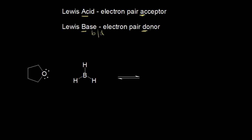In this reaction, a cyclic ether on the left reacts with borane on the right. Boron has no full octet—it's surrounded by only six electrons—making it very reactive. Boron is sp2 hybridized, meaning it has an empty p orbital that can accept a pair of electrons. The oxygen on the ether donates a pair of electrons into that empty orbital, forming a bond between oxygen and boron. The ether is our Lewis base and borane is our Lewis acid.